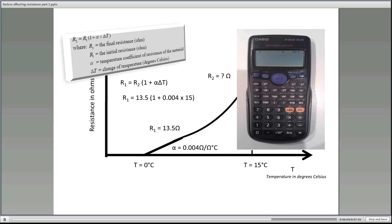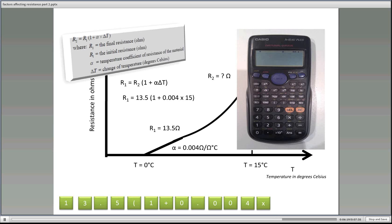Now using the calculator, it all depends what calculator you've got. We just go 13.5 then in brackets 1 plus 0.004 times 15. Close brackets equals and you should get 14.31 ohms. Now you should get an answer larger than that because we've got a positive temperature coefficient.